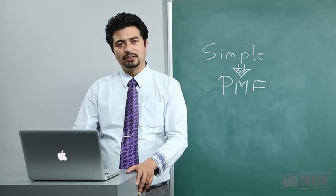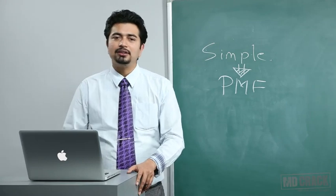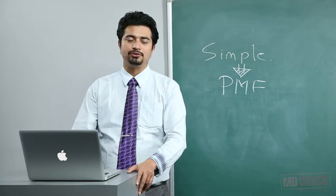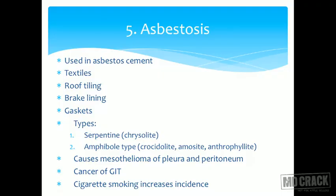Asbestosis is a killer disease caused by asbestos, which is very commonly used — in corrugated sheets over houses, asbestos doors, roofs, brake linings, fire equipment, asbestos cement, textile industries, roof tiling, and gaskets. A particular state where asbestos is very common is Gujarat, which has a shipwrecking industry where a lot of asbestos is liberated and many people get asbestos exposure. There are two types of asbestos: the serpentine variety and the amphibole variety.